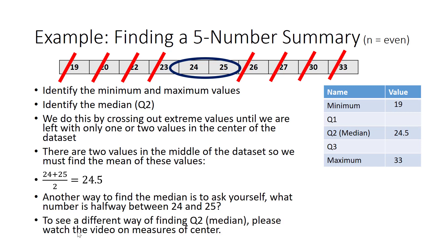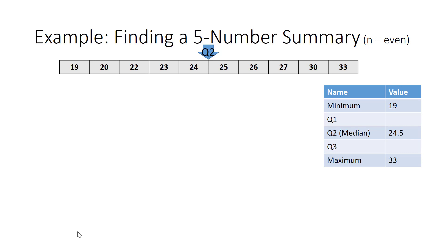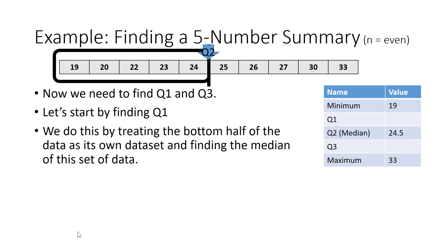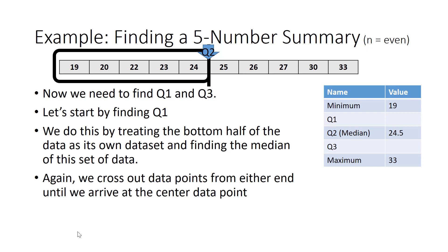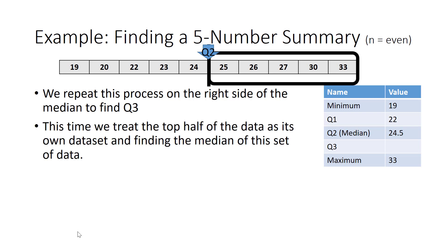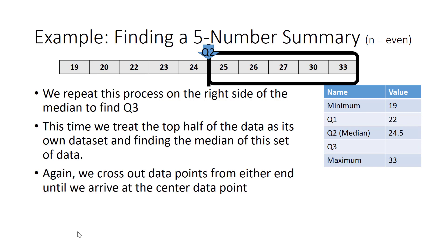If you would like to see a different way of finding Q2 or the median, please watch the other video on measures of center. Now that we've found the minimum, maximum, and median, we still need to find Q1 and Q3. We find Q1 by treating the bottom half of the data as its own data set and finding its median by crossing out data points from either end until we arrive at the center. Therefore, Q1 is 22. We repeat this process on the top half to find Q3, which is 27. We now have our complete five-number summary.